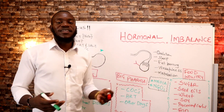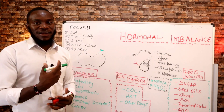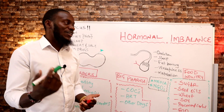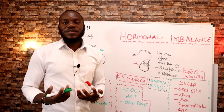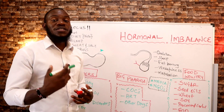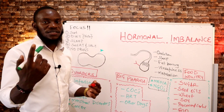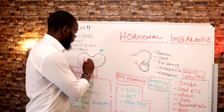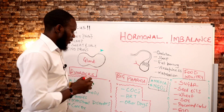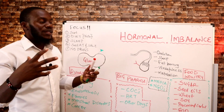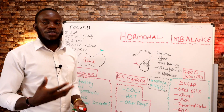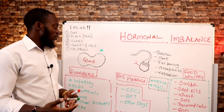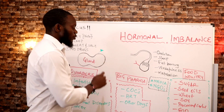Hormonal imbalance basically means you either have more hormones or less hormones in the system. A hormone is a chemical substance that the body uses to communicate between cells. Here we have a gland — maybe the pituitary gland or the thyroid gland — and the major function of these glands is to produce hormones.